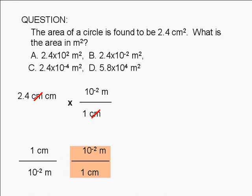To cancel the other centimeter unit, we multiply by the same conversion factor one more time. Now we cancel the other centimeter unit. This gives us an answer of 2.4 times 10 to the negative 4 meters squared. We need to express our answer to two significant digits since our original quantity has two significant digits.